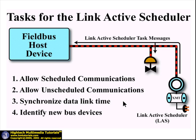Here is a partial list of the tasks performed by the Link Active Scheduler. As you already know, this includes granting permission for scheduled communications and unscheduled communications on the bus. The details of these data transfers were presented previously in this tutorial.